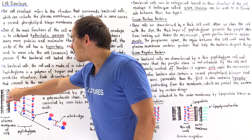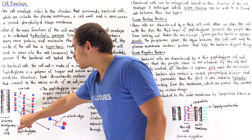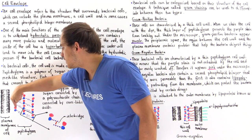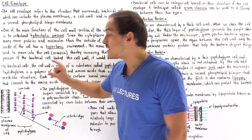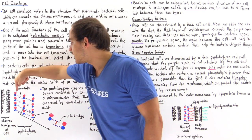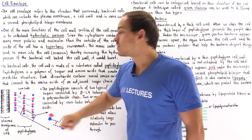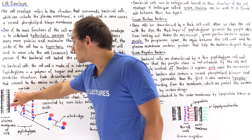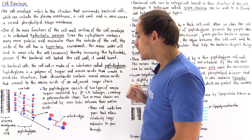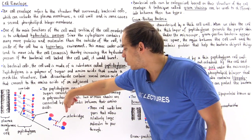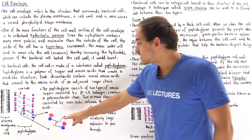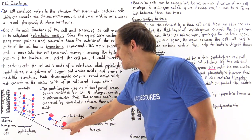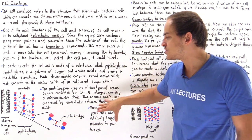There are multiple polysaccharide chains — chain 1, chain 2, chain 3, and so forth. These individual polysaccharide chains, which consist of disaccharide units, are connected to one another via cross-linkages. The amino acids on one chain connect to the amino acids on an adjacent chain through a bridge known as an interbridge, creating the mesh-like structure of peptidoglycan.